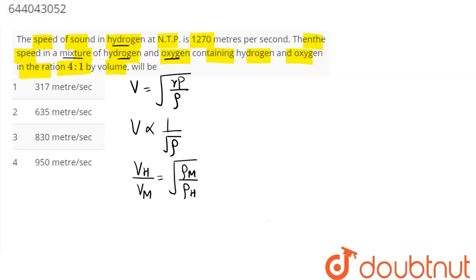So we require the ratio of rho mixture by rho hydrogen. This can be written as rho mixture, which comes out to be density of mixture is mass of mixture divided by volume of the mixture.